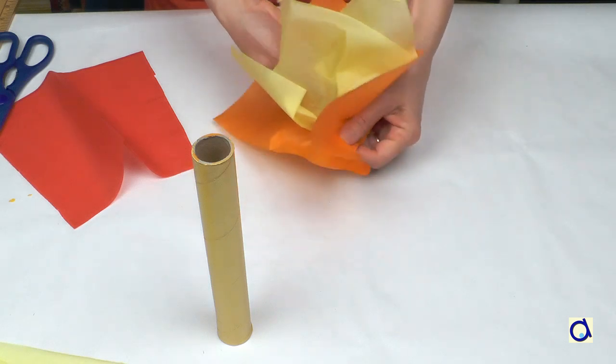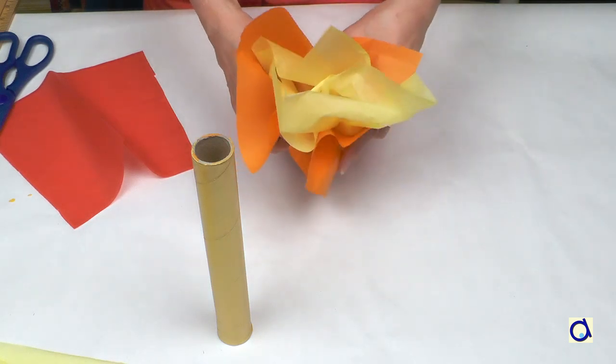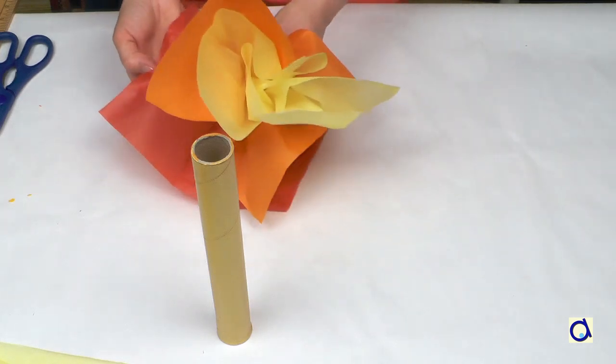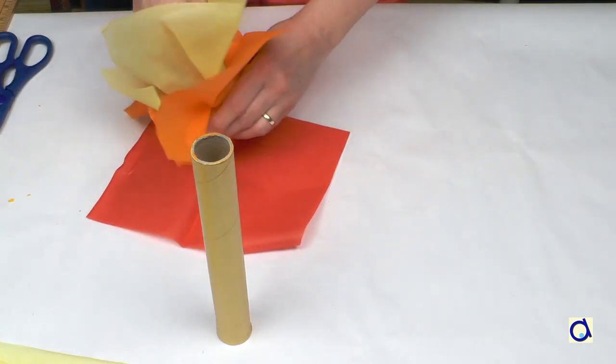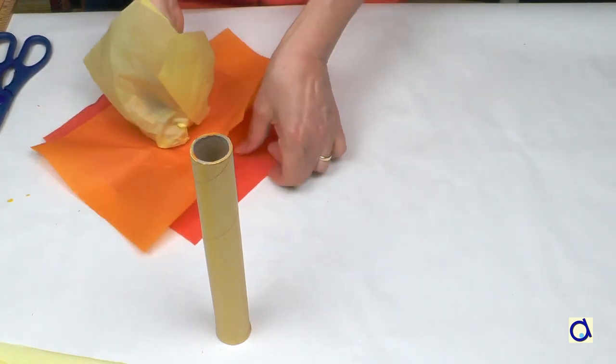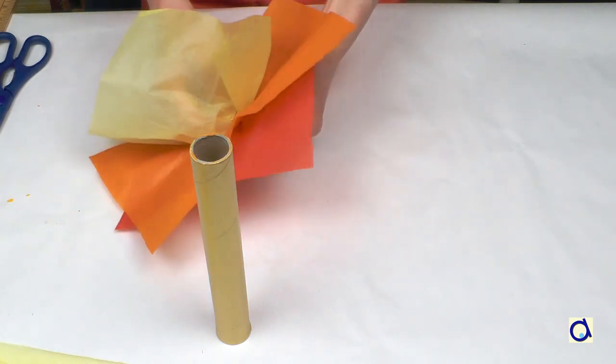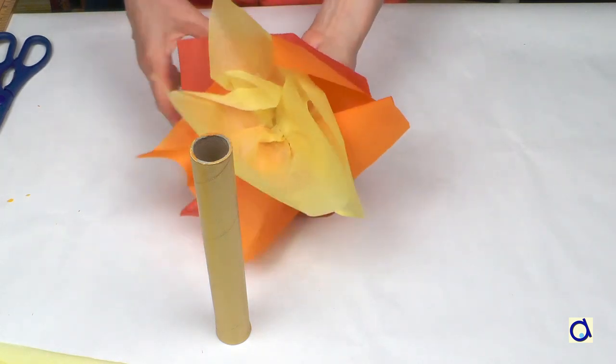Take the yellow tissue paper and place a finger in the middle. Then take the orange tissue paper and wrap it around the yellow tissue paper. And finally, take the red tissue paper and wrap it around the orange tissue paper. This gives you a color sequence that forms the flame.